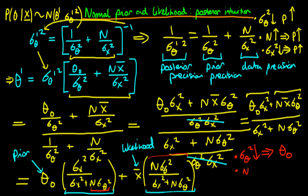What happens if we increase our sample size? If n increases, we can see from the first term that the denominator increases, causing a decrease in the weighting towards the prior. In the second term, since n appears on both top and bottom, increasing n causes an increased weight towards the likelihood. So if n increases, we weight less towards the prior and more towards the likelihood — more towards the maximum likelihood estimate x-bar.